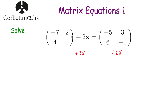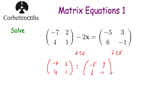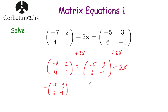On the left-hand side we just added 2x to get rid of the minus 2x, so we'd just be left with [-7, 2, 4, 1]. On the right-hand side we had the matrix [-5, 3, 6, -1] and we're just adding 2x. Now we want to get rid of this matrix, so let's subtract [-5, 3, 6, -1] from both sides of the equation.